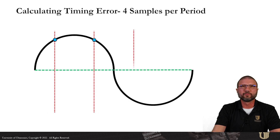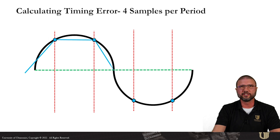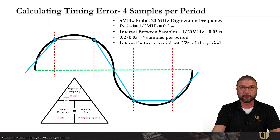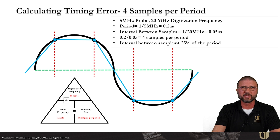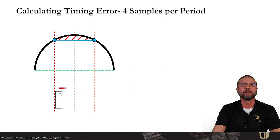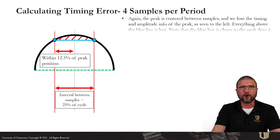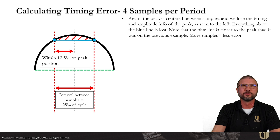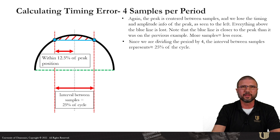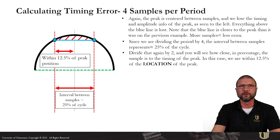For the next scenario: a 5 megahertz probe with a 20 megahertz digitizing frequency, giving us four samples per period. Notice that none of the samples actually aligned with the peaks — where a sample lines up on a cycle is random and impossible to predict. There's no guarantee you'll ever find the actual peak of the signal, but the closer we get, the better. The max error always occurs when the peak is centered between samples. Note that the blue line in this case is closer to the peak than in previous examples — more samples equals less error.